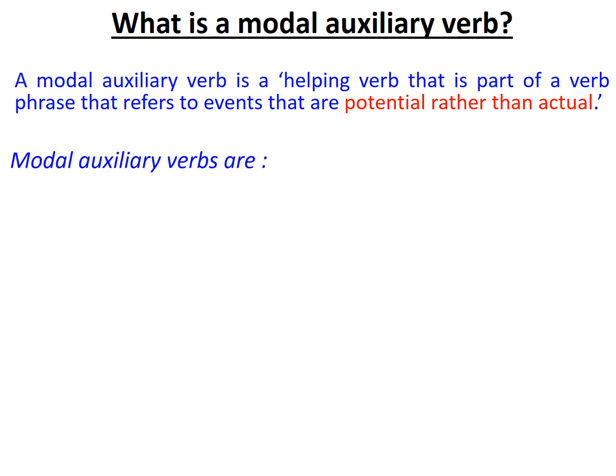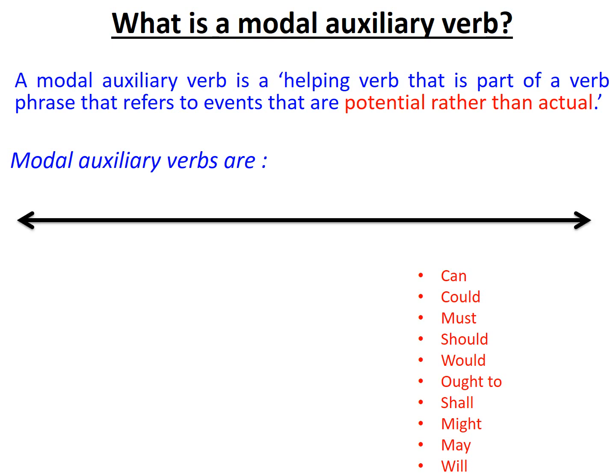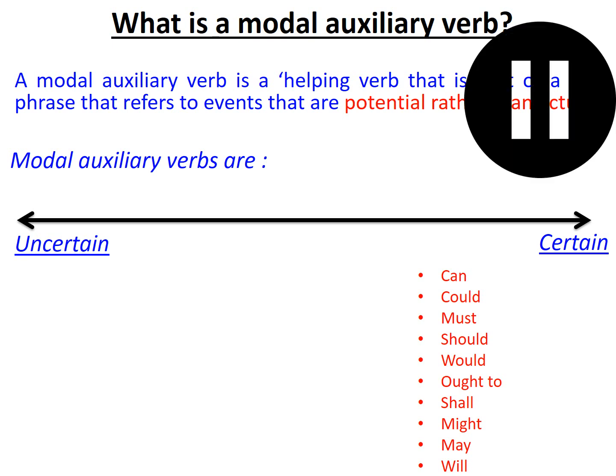Modal verbs, as listed below in red, suggest possibilities of what might happen, what should happen, what could happen, what would happen. They're in the wrong order in the list below, so I would like you to map them onto the line from uncertain to most certain. Hit pause if you need thinking time about where you would place each of these modal auxiliary verbs on the spectrum.